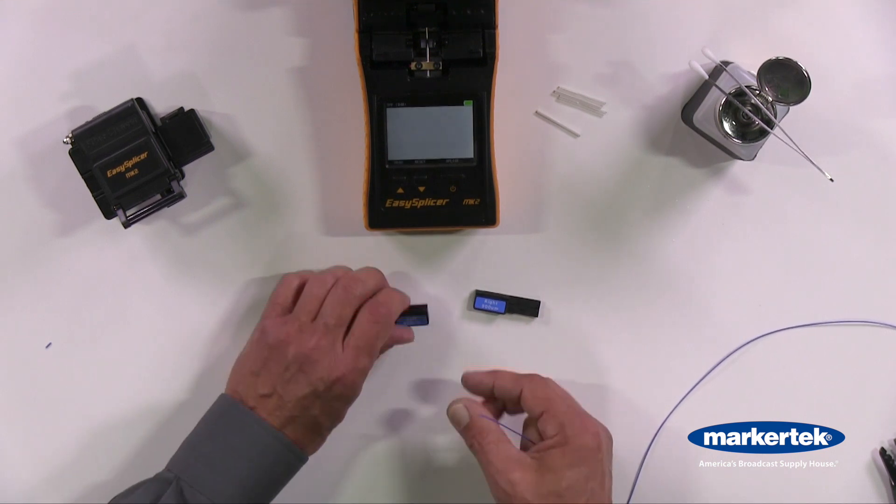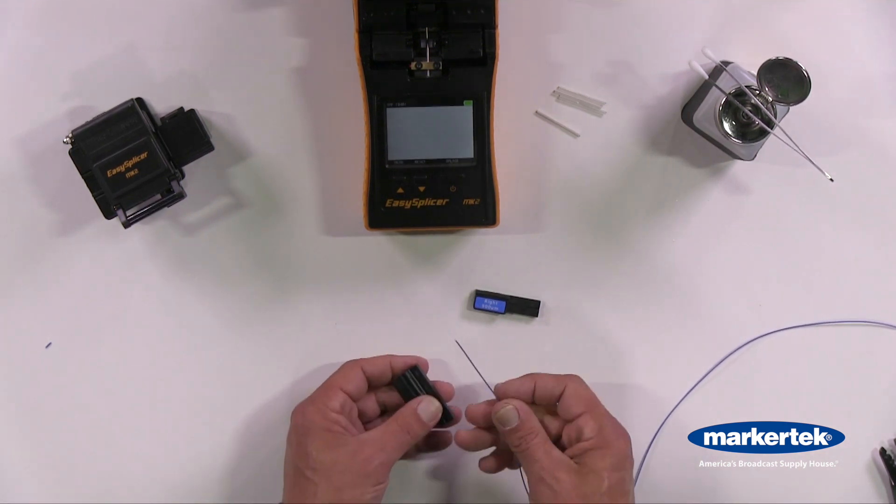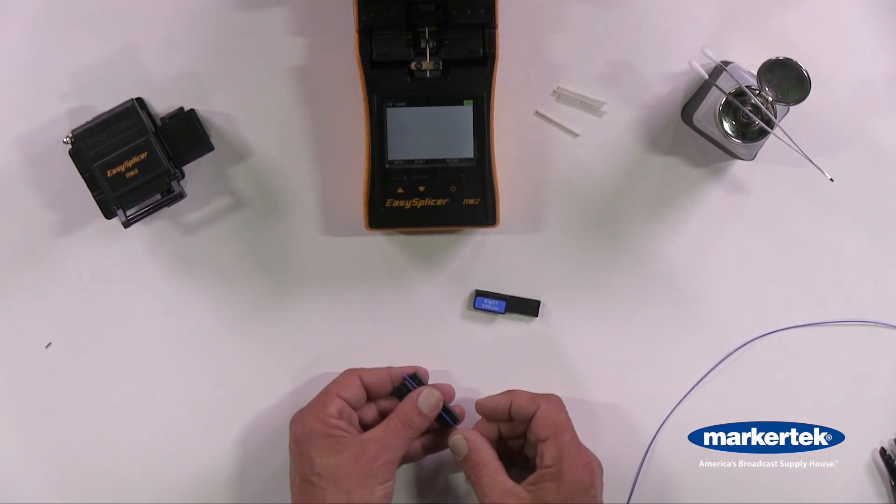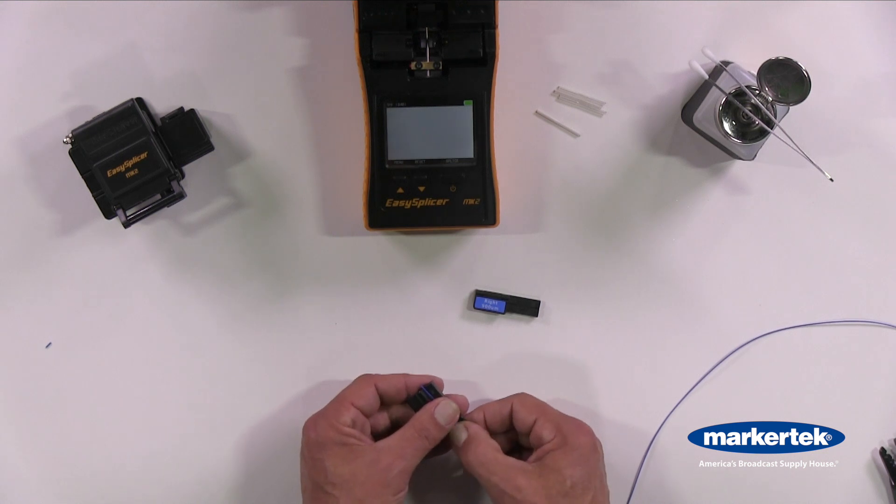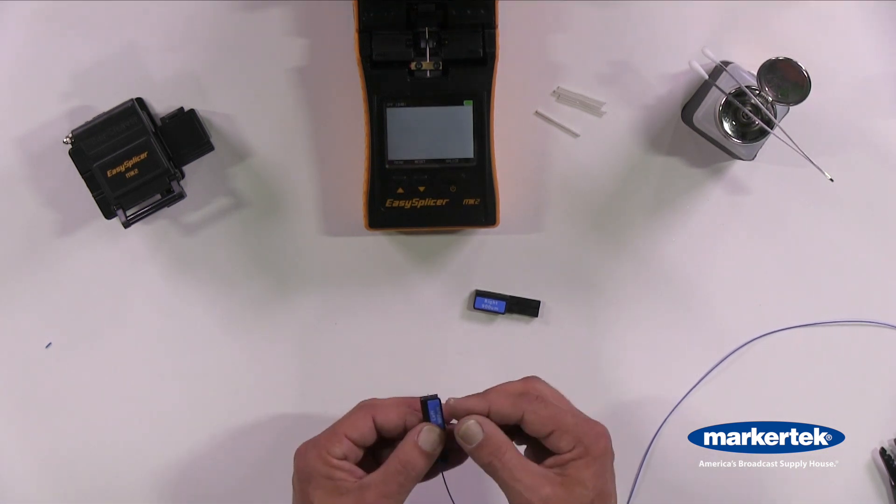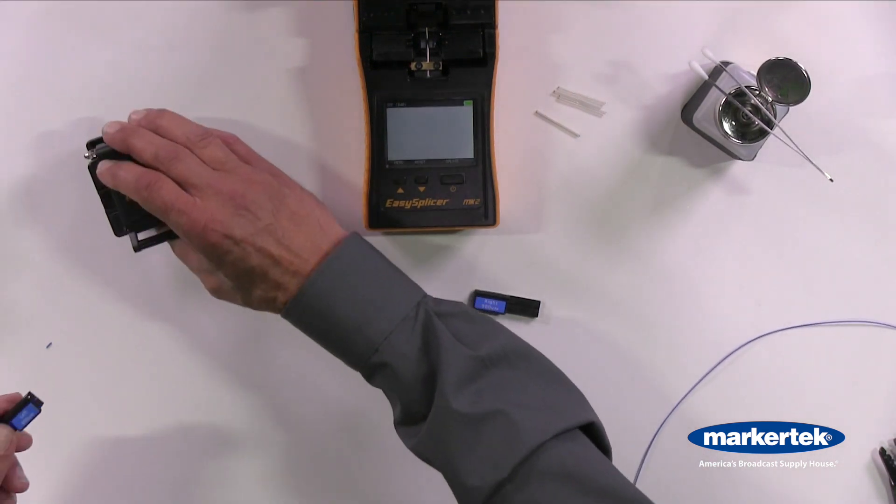There's a left and a right. We're going to use them accordingly. Place the fiber in the V-Groove. Make sure it's in the V-Groove properly. A little bit of it sticking out of the 900 micron.